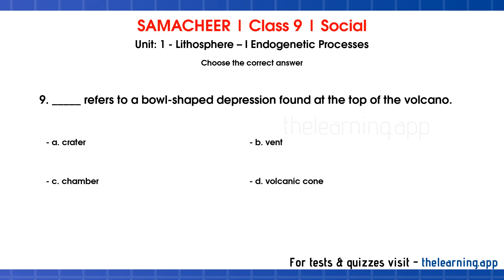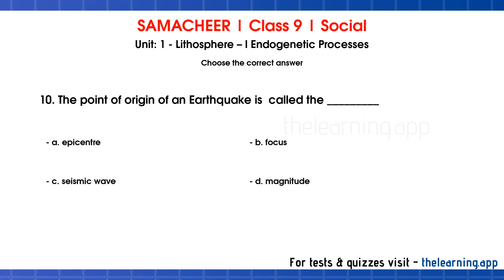Ninth question — dash refers to a bowl-shaped depression found at the top of the volcano. Options: A crater, B vent, C chamber, D volcanic cone. Correct answer is option A: crater. Tenth question — the point of origin of an earthquake is called the dash. Options: A epicenter, B focus, C seismic wave, D magnitude. Correct answer is option B: focus.